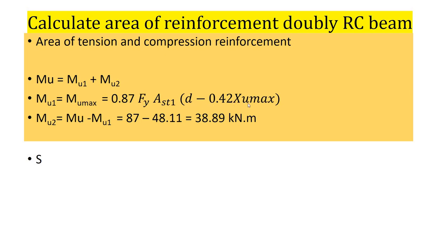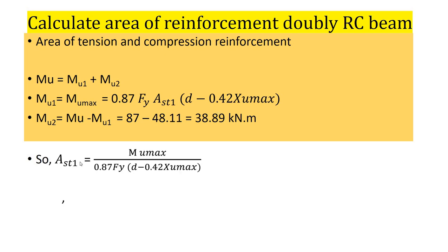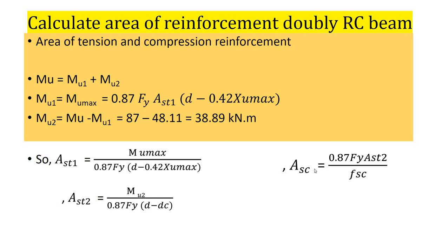mu1 equals the maximum moment of resistance, and mu2 equals the total applied moment minus mu1. So the applied moment is 87 kNm and the maximum moment of resistance for the balanced section is 48.11 kNm, giving mu2 as the additional moment. Ast1 is the area of tension reinforcement for the balanced section, Ast2 is the area of tension reinforcement for the remaining moment, and Asc is the area of compression reinforcement for the additional moment.